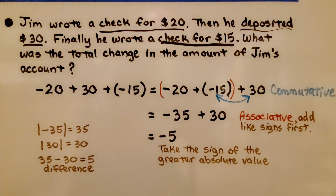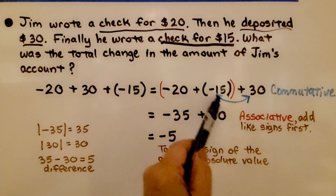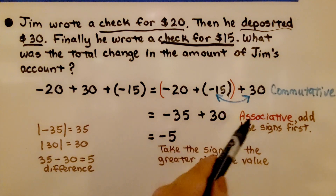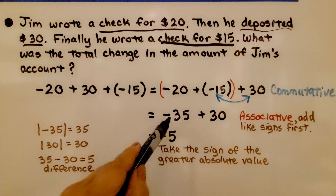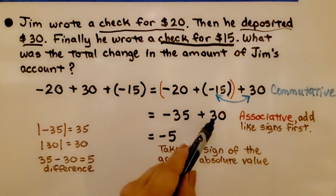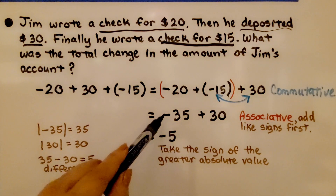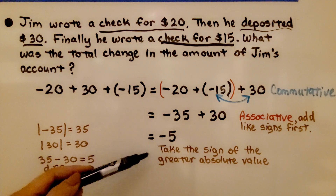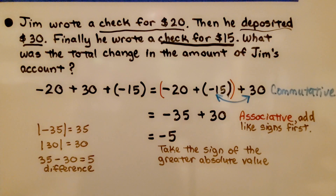We use the commutative property to swap the negative 15 and the positive 30 — the 30 moves to the end. Then we use the associative property to add the like signs: negative 20 plus negative 15 equals negative 35. He deposited $30, and the difference between the absolute values is $5. Negative 35 has the greater absolute value, so our answer is negative 5 — Jim's account decreased by $5.